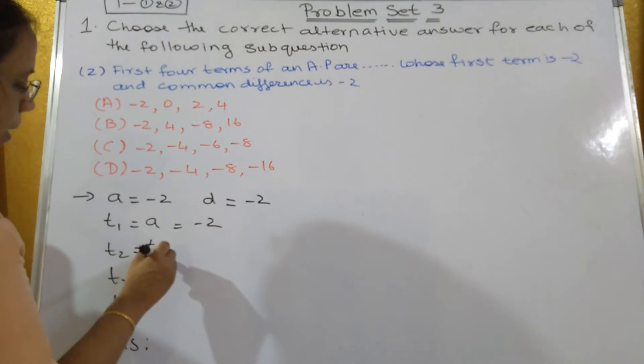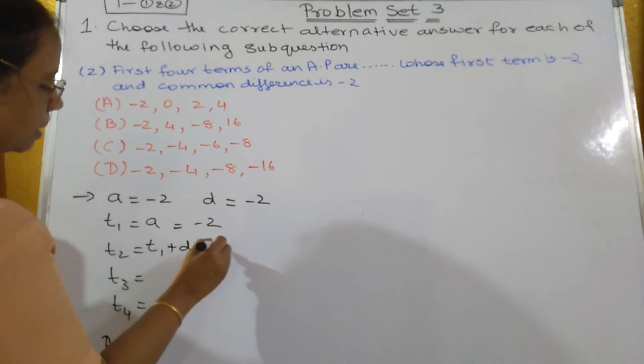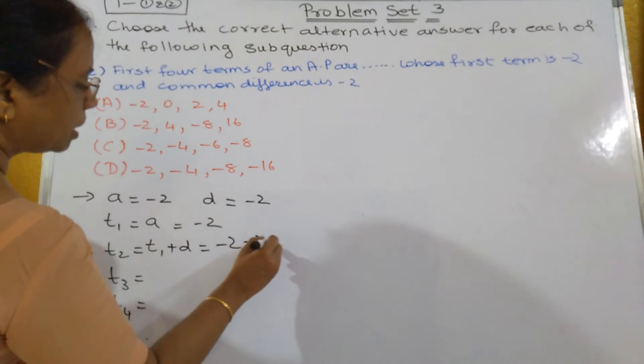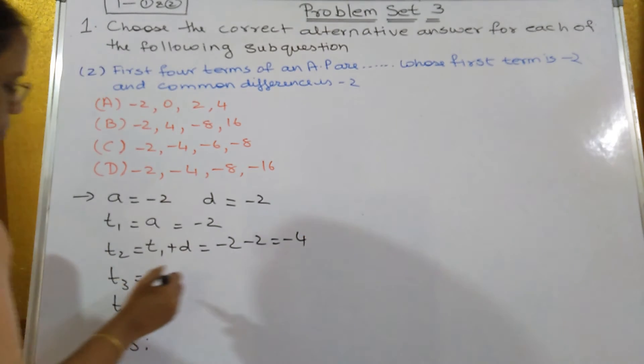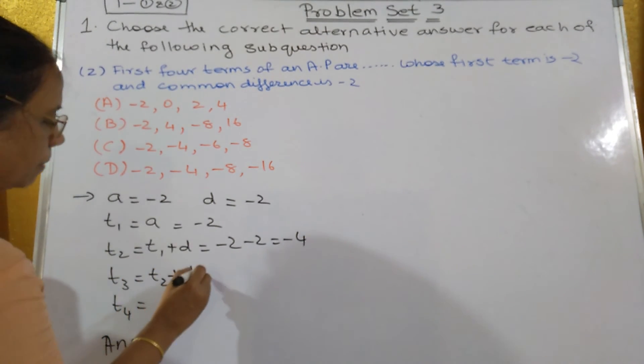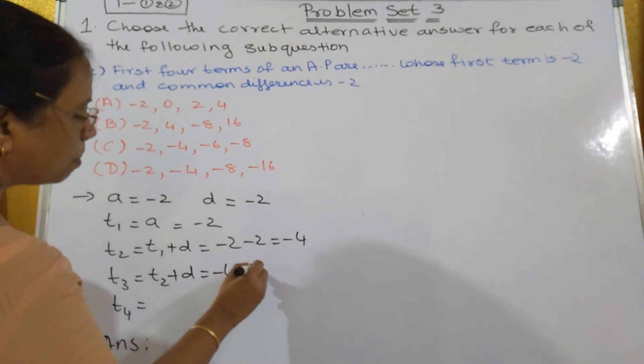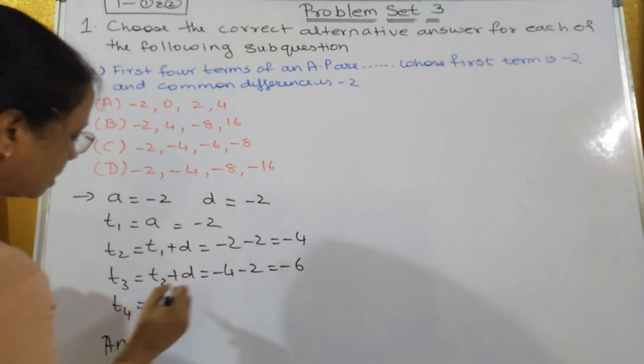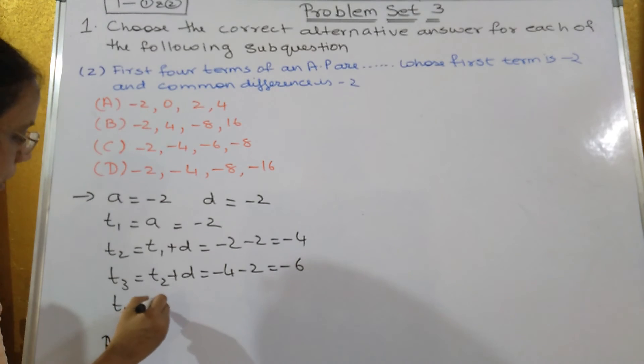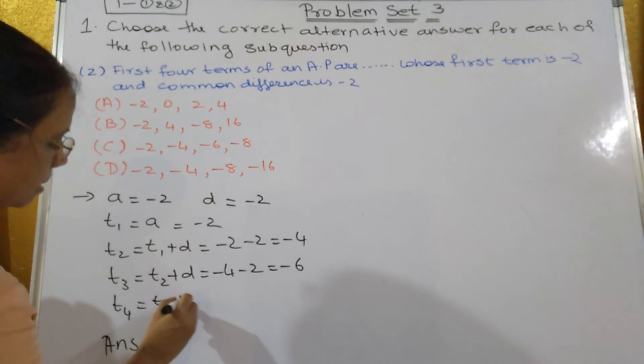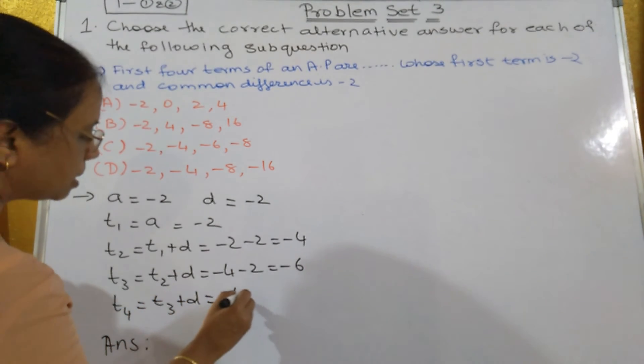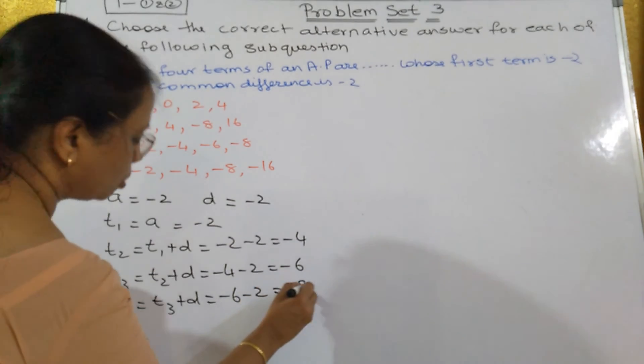T2 is what? T1 plus D, that's equal to minus 2 minus 2, that's equal to minus 4. T3 is what? T2 plus D, that's equal to minus 4 minus 2, that's equal to minus 6. T4 is what? T3 plus D, that's equal to minus 6 minus 2, that's equal to minus 8.